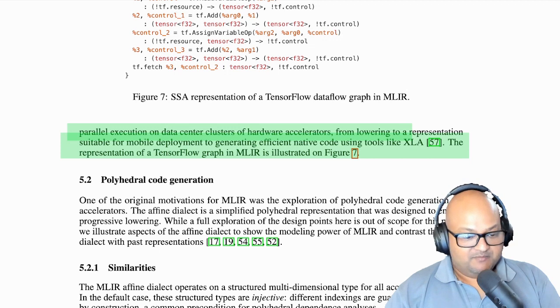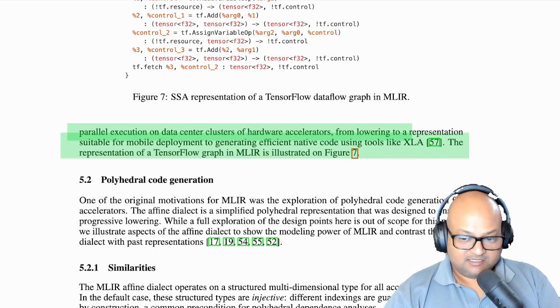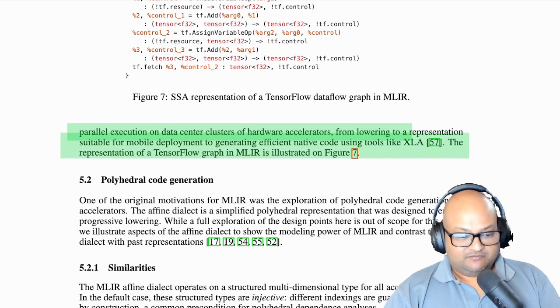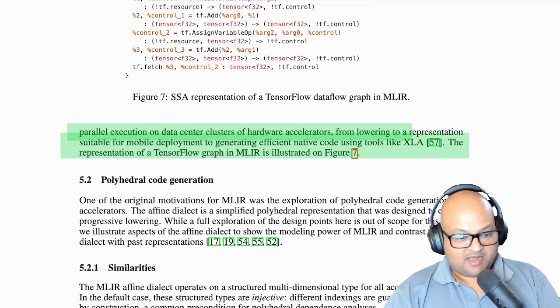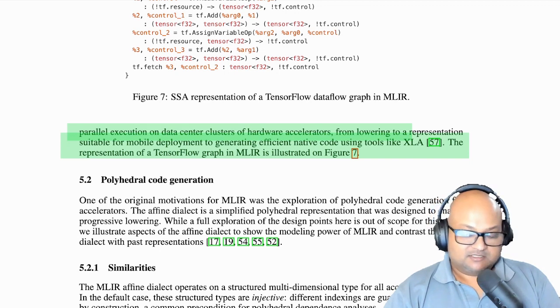So that was a quick look at multilevel IR, a new compiler intermediate representation and infrastructure, which is getting a lot of traction in the machine learning space these days. I hope you enjoyed that. Check out the couple of other related videos, which will serve as good background to this one. There's one on LLVM and there's another one on SSA and I'll link those down in the description below. I hope you enjoyed that and I will see you all next time. Thank you very much.